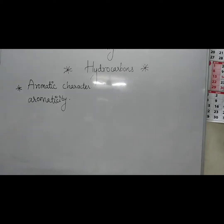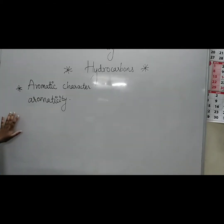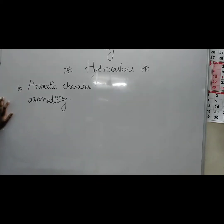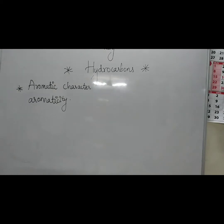We have three rules for this. The first rule is that aromatic compounds are cyclic and planar — they have planar structures and cyclic structures. This is the first rule of aromatic compounds. The second rule is that each atom in the aromatic ring has a p orbital. The carbons attached in the ring — all the carbons forming the compound's ring — must have p orbital involvement.